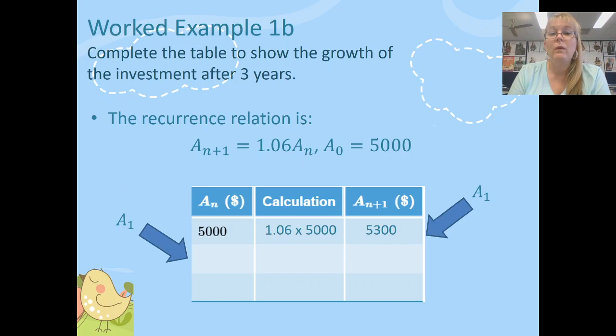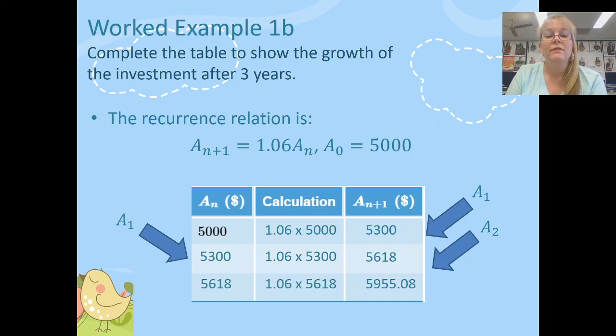Now you'll notice that A_1 is then popped into that first column because that's our next year and then we're going to multiply that by 1.06 and our period at the end of the year, A_2 is going to be $5,618. That's how much money we've got at the end of the second year. But we're not finished. The question wants us to do it after the end of three years. So once I do the same process again, A_2 pops into the first column. I multiply that by 1.06 and I end up with a finishing value.